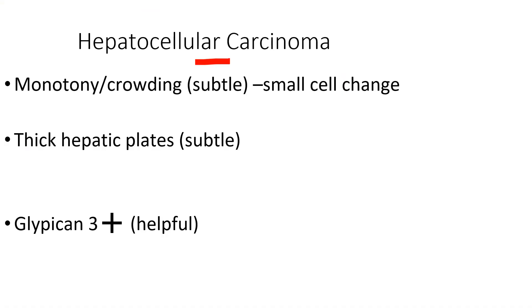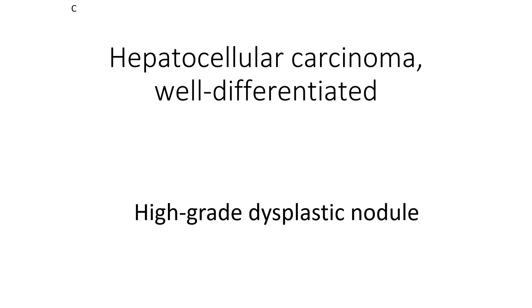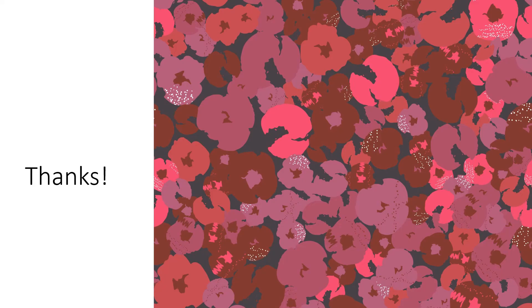So the evidence for hepatocellular carcinoma: there was definitely crowding; thickened hepatic plates were present but very subtle. The glypican-3 was definitely helpful. I call this a very well-differentiated HCC. If you call it a high-grade dysplastic nodule, I would not fault you — the distinction between very well-differentiated HCC and high-grade dysplastic nodule is extremely difficult. In many clinical contexts it has no significance whatsoever, but that will be the focus of another talk. Thank you for listening and for your support. Good night.